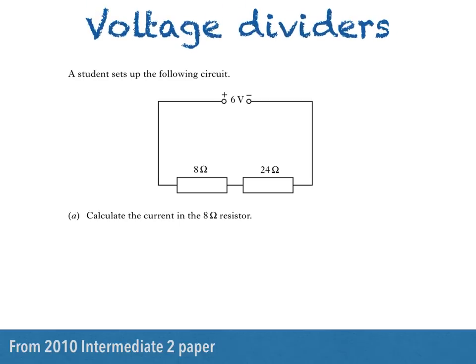Hi there. In this video I'll be answering a question on voltage dividers, calculating the current in a series circuit containing two resistors and the voltage across one of them. Here's a question from the 2010 Intermediate 2 paper. A student sets up the following circuit.